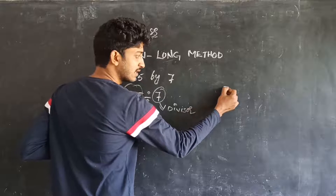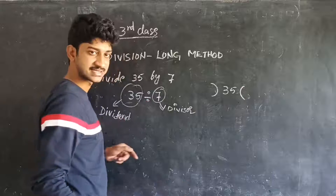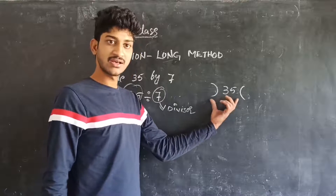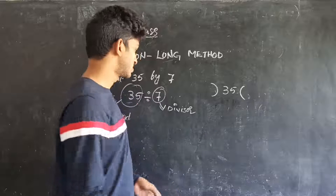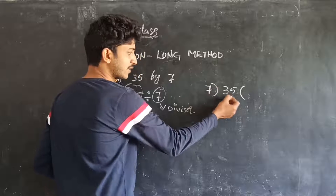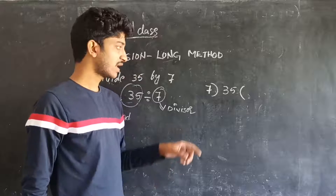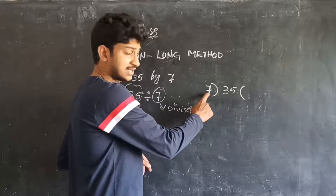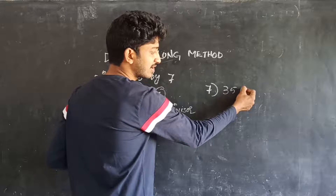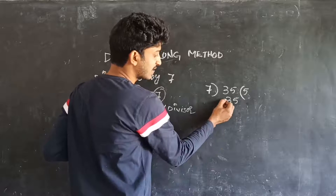We have to take the dividend at the center, with brackets on both sides. We have to place the divisor on the left side of the dividend. Now here in the 7 times table, 35 appears 5 times — 7 into 5 is equal to 35. We have to subtract here.